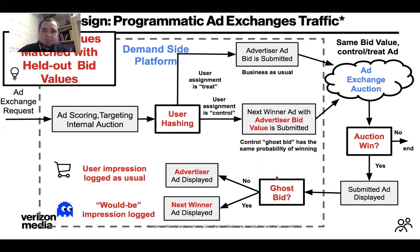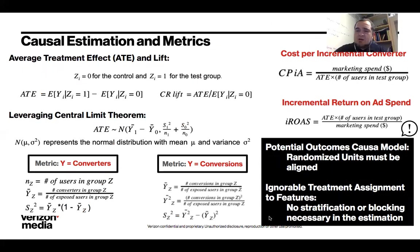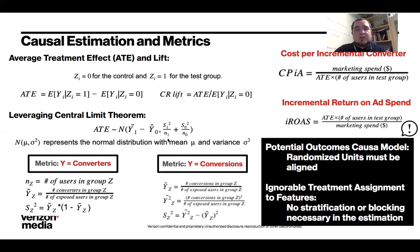The causal estimation after this becomes straightforward. Within the potential outcomes causal model, we randomize users, so variability is at the user level. Other than that, it's standard t-test and hypothesis testing.